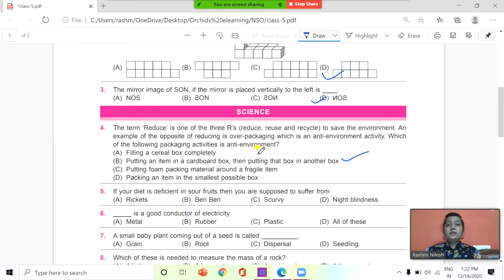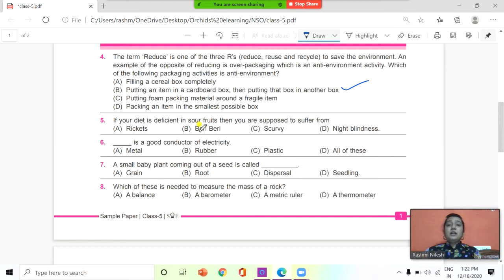And the answer is B: putting an item in a cardboard box then putting that box in another box. Next, if your diet is deficient in sour fruits then you are supposed to suffer from which disease? You need to identify the disease here. If your diet is deficient in sour fruits then you are supposed to suffer from rickets, beriberi, scurvy, and night blindness. The answer is C, scurvy.